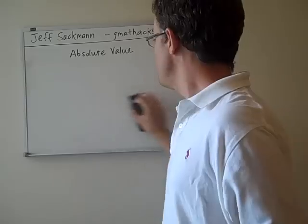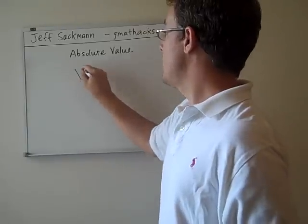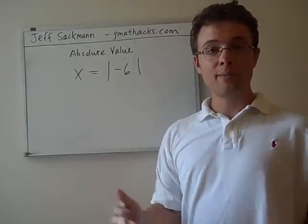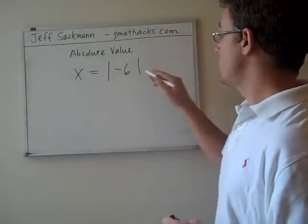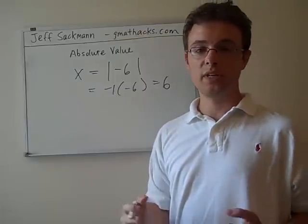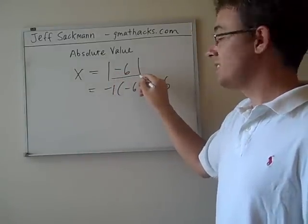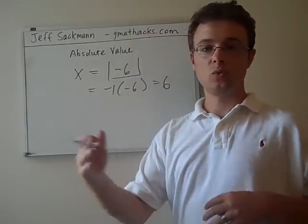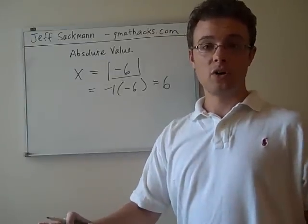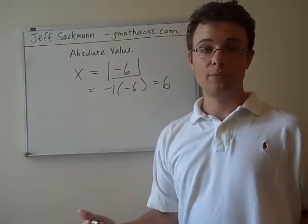Let's move on to how you can work with absolute value in the context of algebra. A simple example would just be to say x equals absolute value of minus 6. We know how to find the absolute value of minus 6. Because minus 6 is negative, we multiply it by minus 1, and we get 6, so x equals 6.